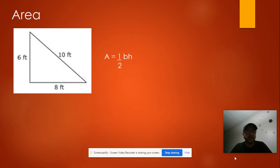On this triangle, the base will be 8, and the height will be 6. So the area will be 1/2 times 8 times 6, which is 24.